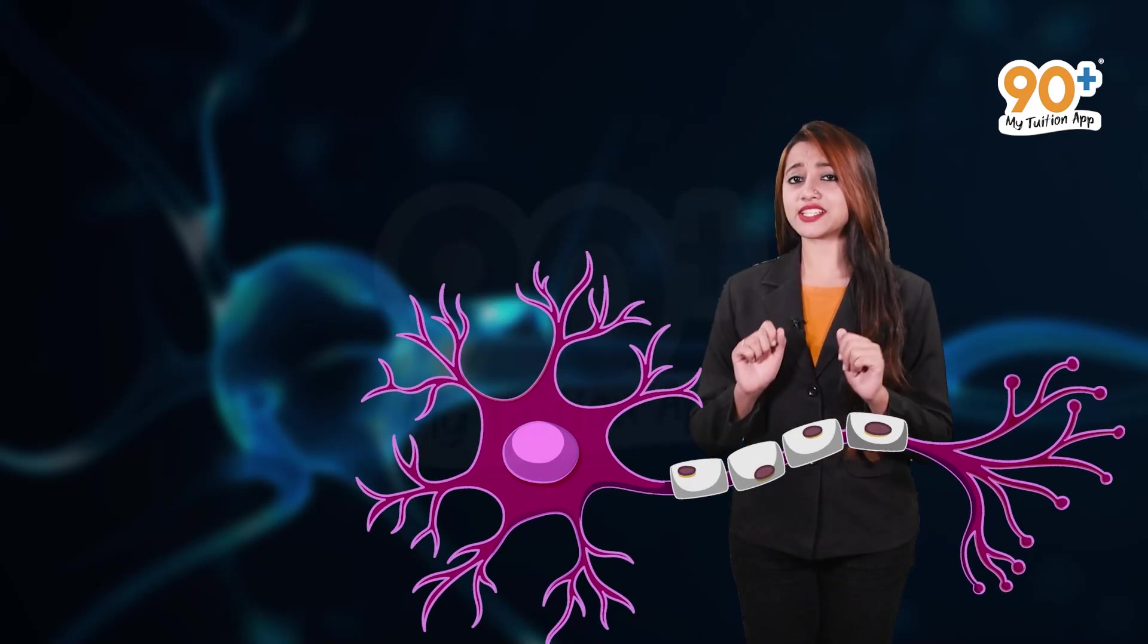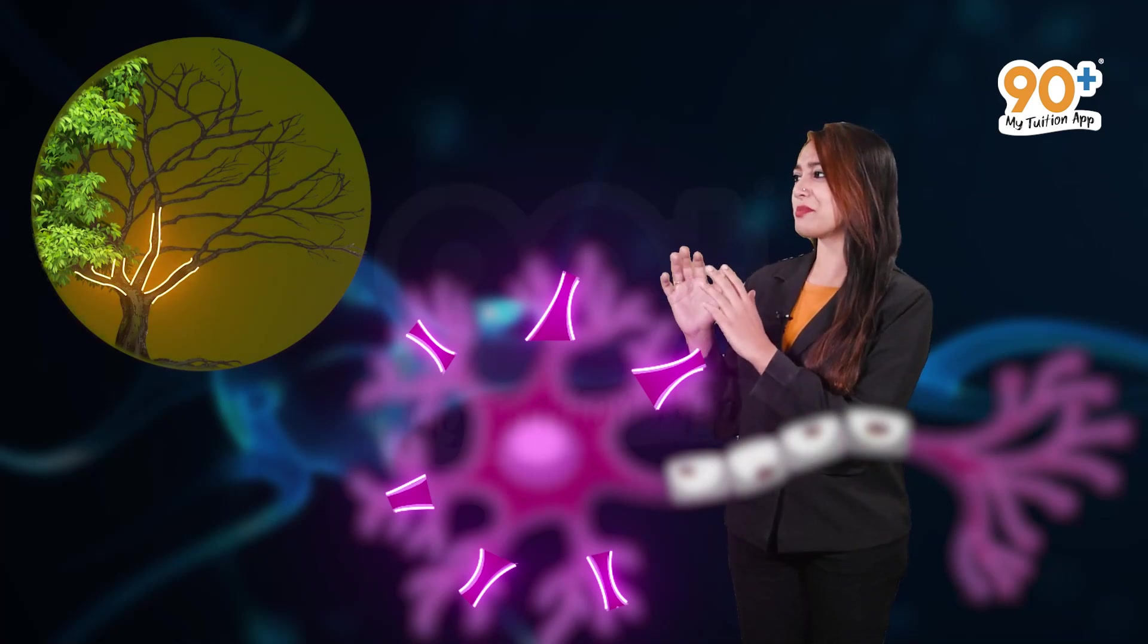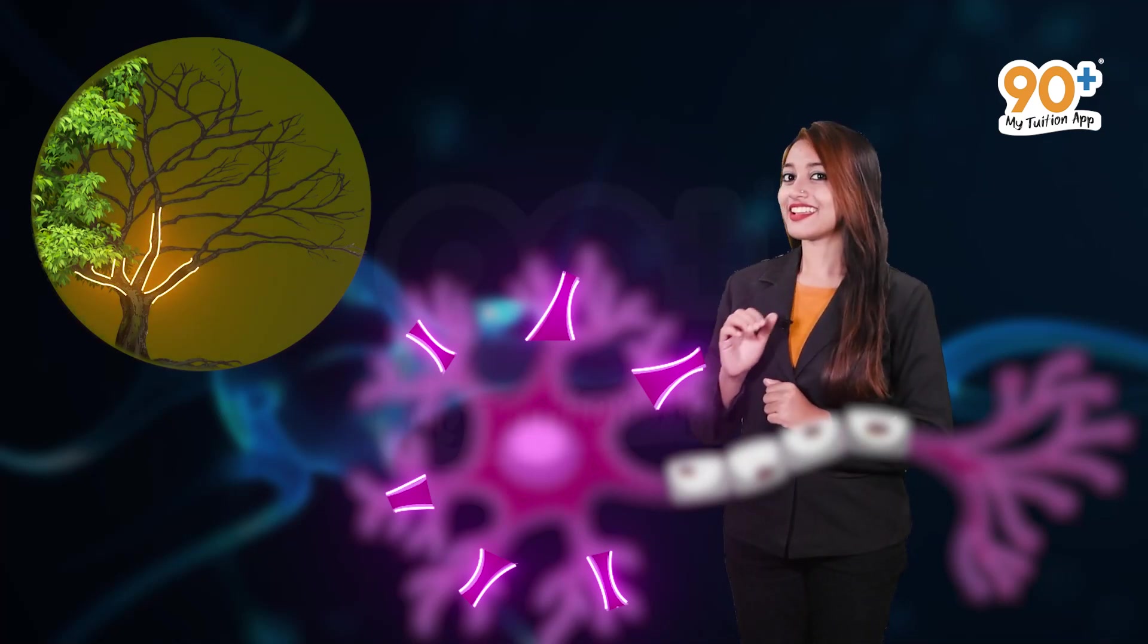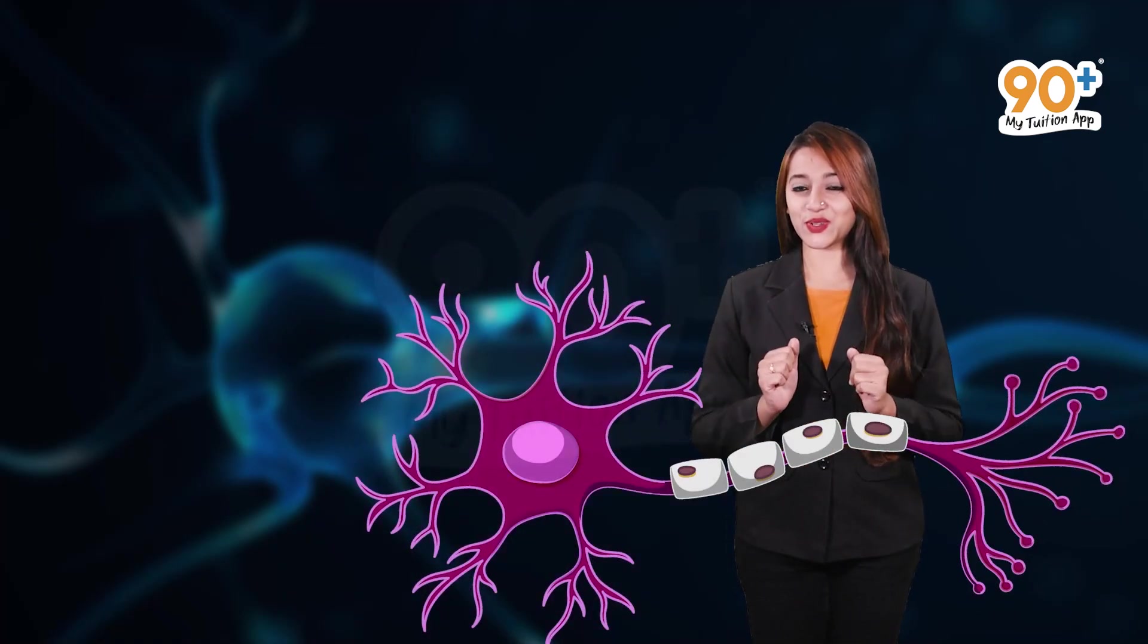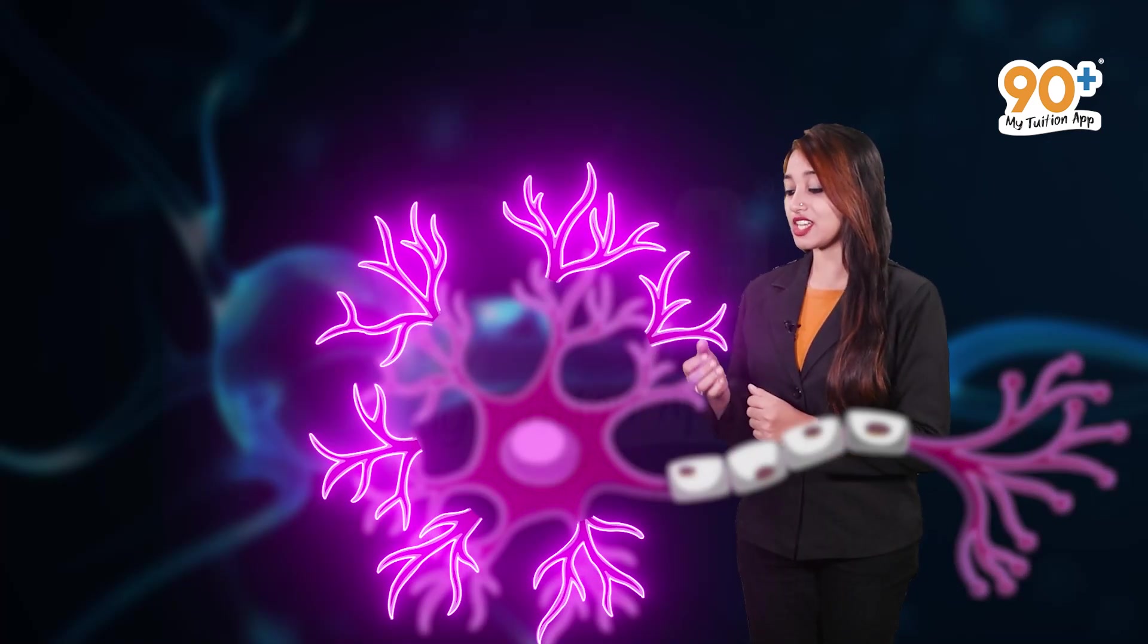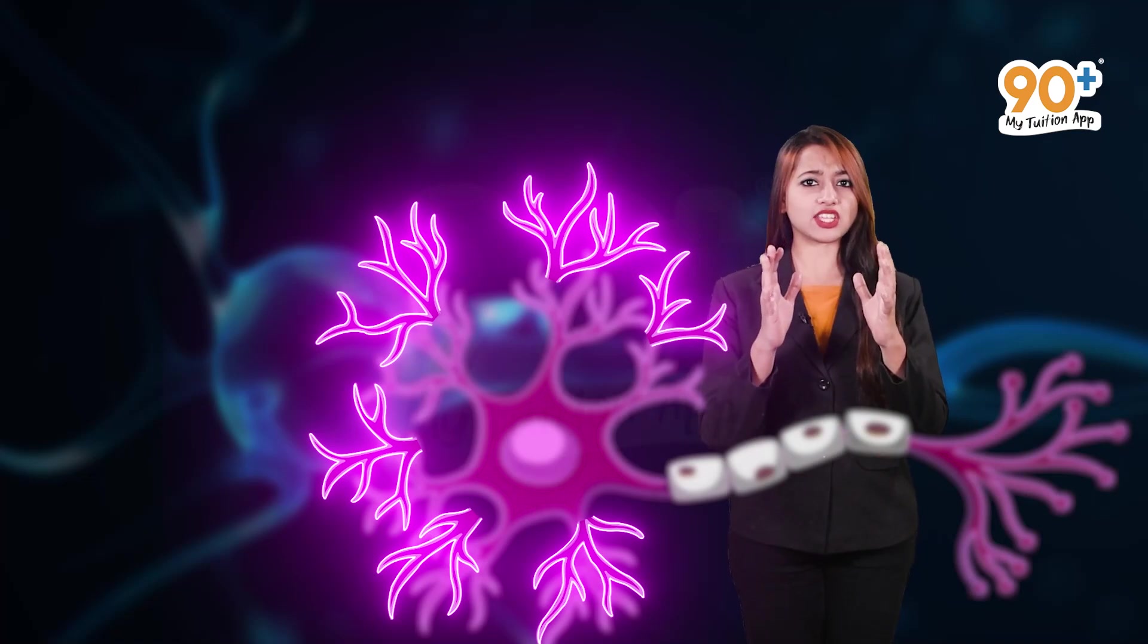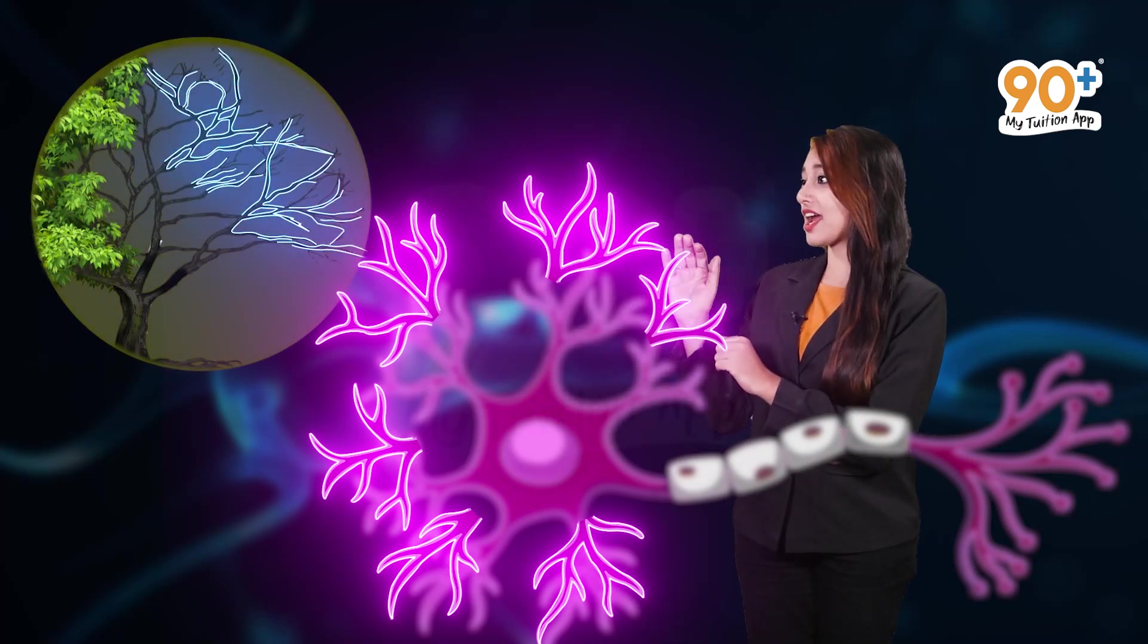Now, you could see certain branches are arriving from the cytone of the neuron. And do they look similar to the main branches of a tree? Yeah, sure it is similar. So, these branch-like projections that are coming out of the cytone of the neuron is called the dendron and also you could see this dendron is again splitted into subbranches as if you could see main branches are again split into subbranches in a tree.